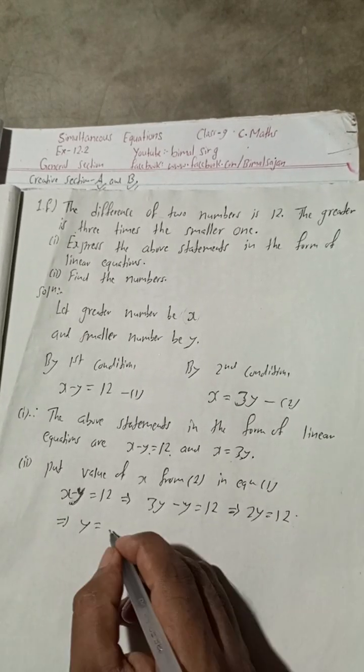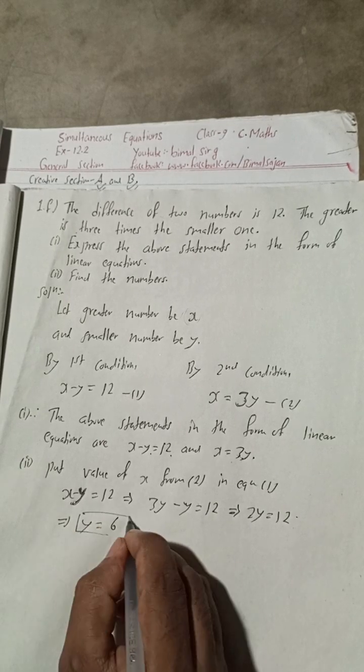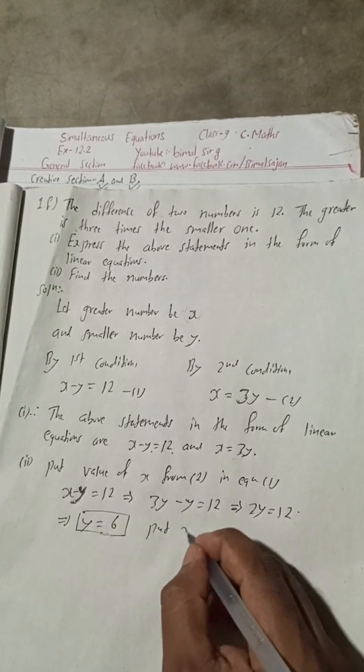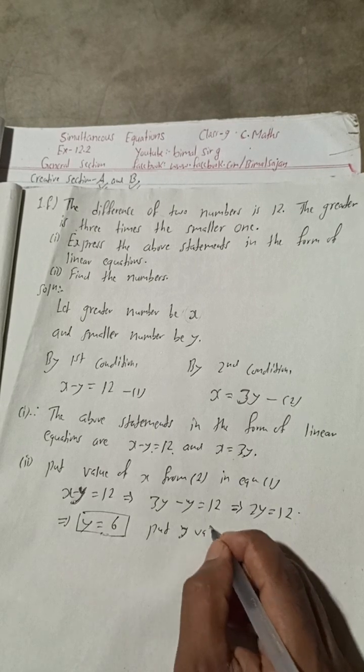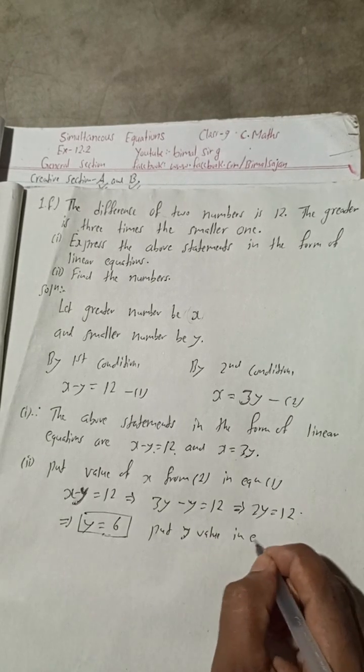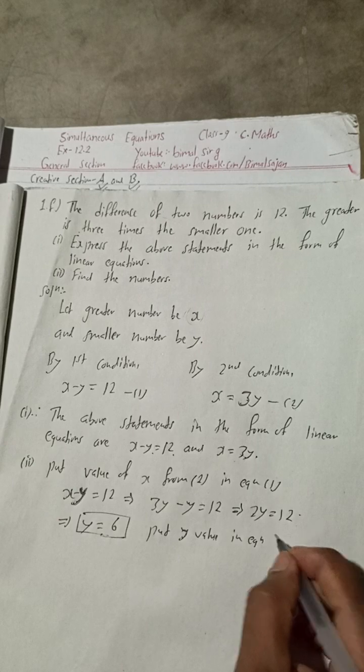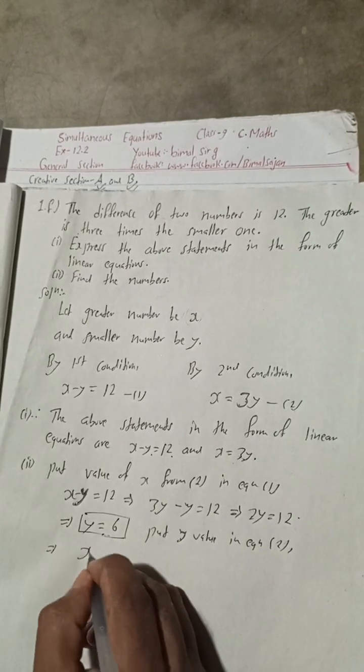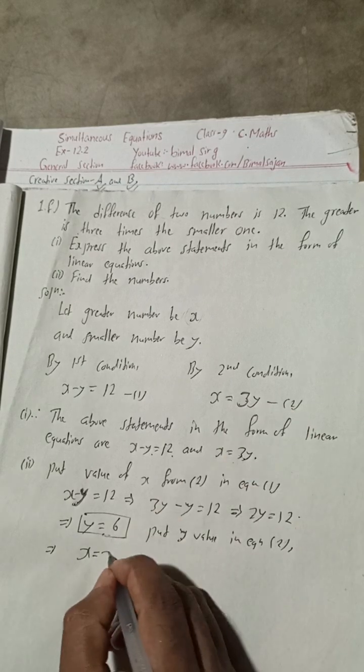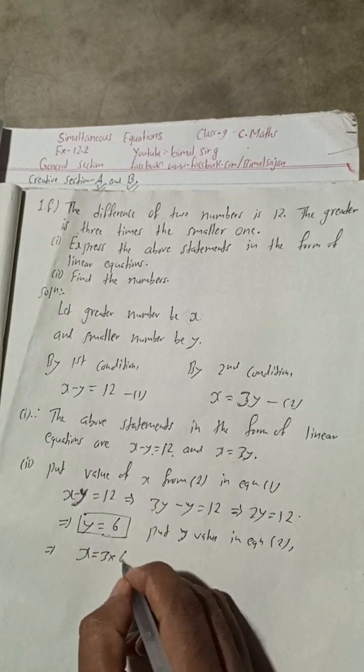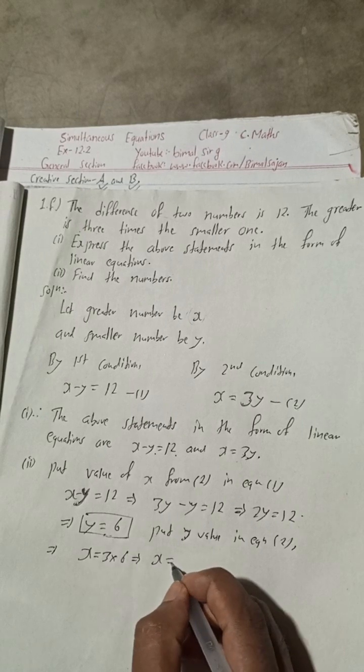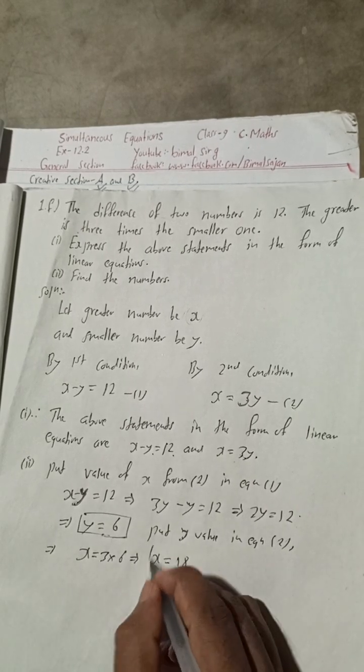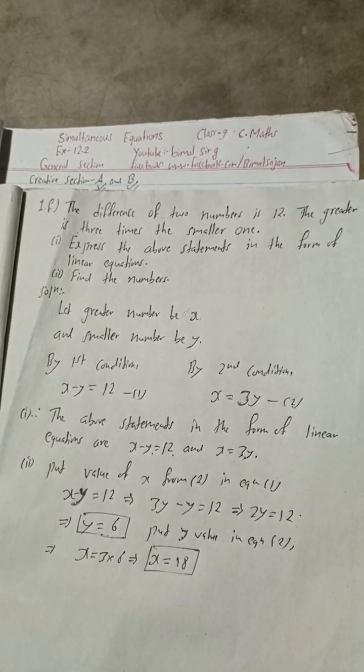Put y value in equation 2. This implies x is equal to 3 times y, so 3 times 6. This implies x is equal to 18.